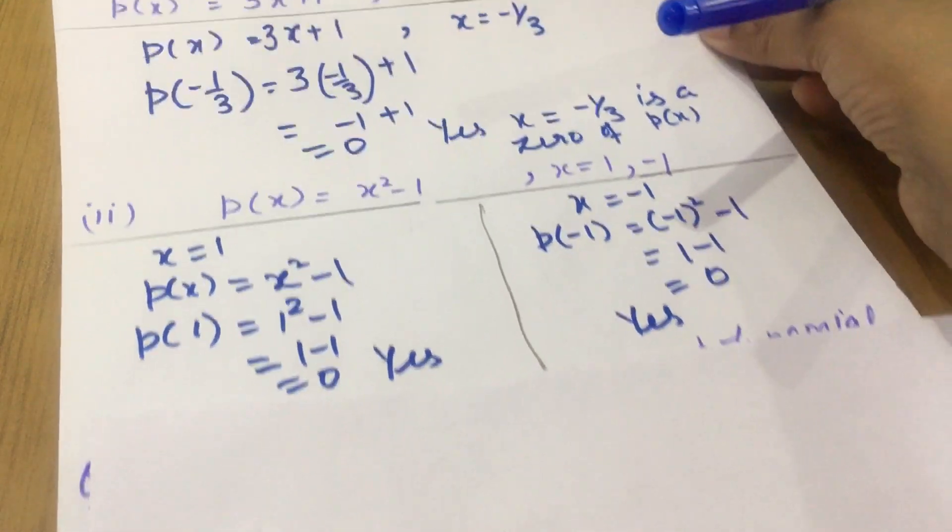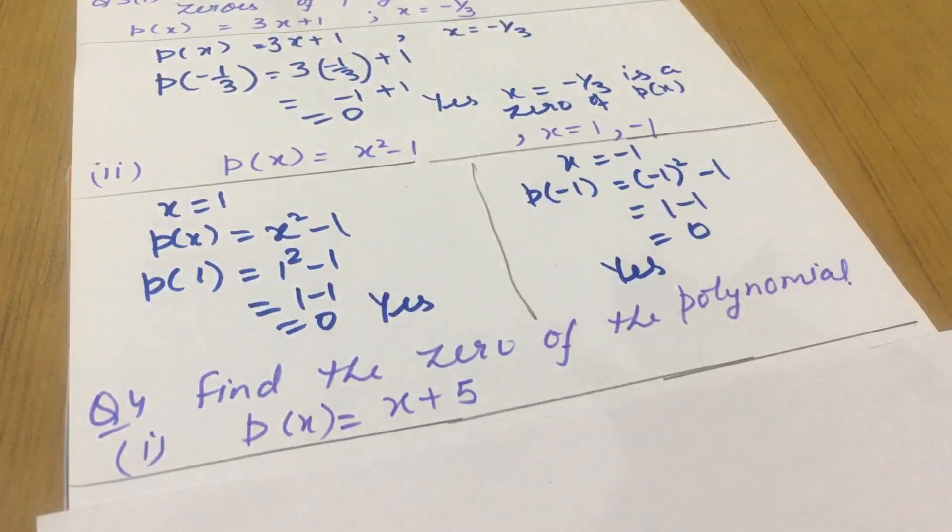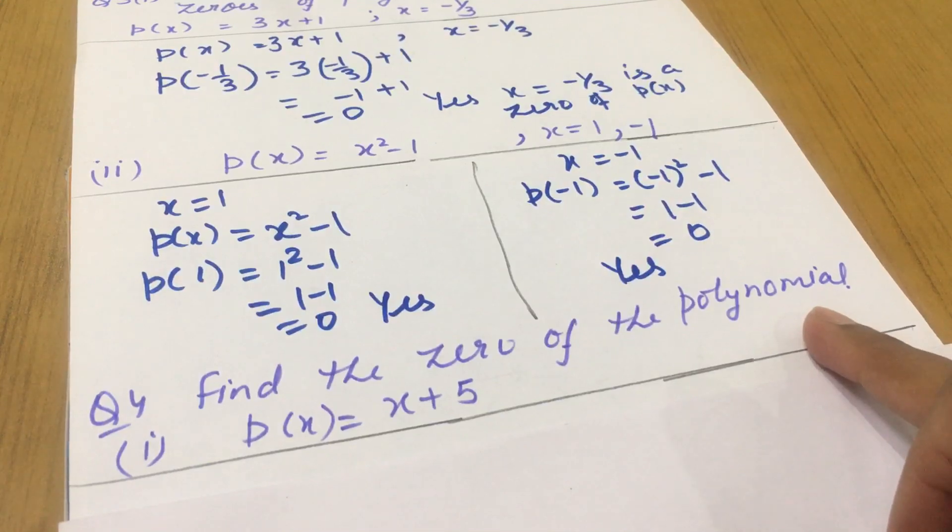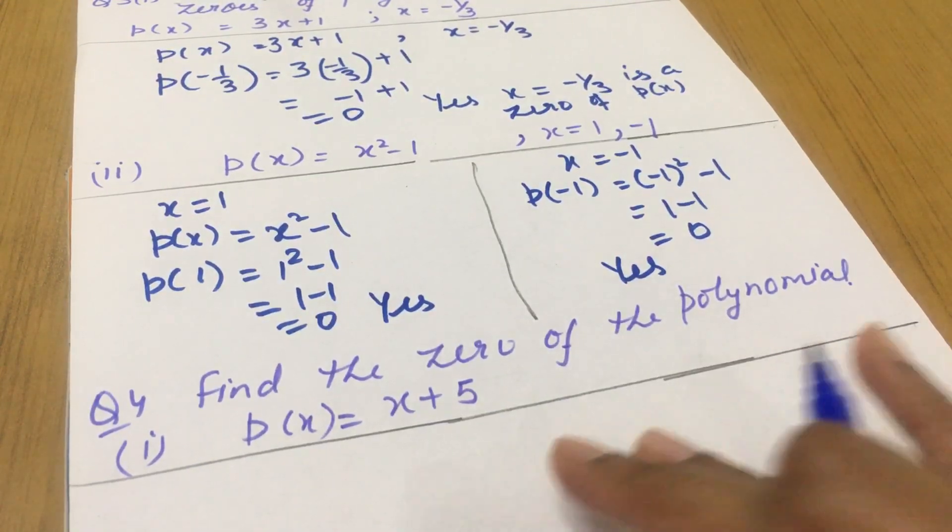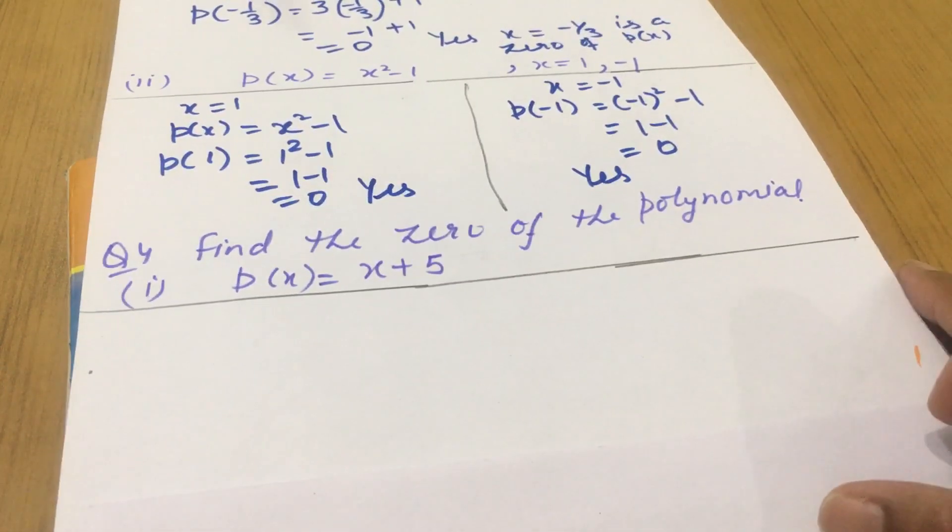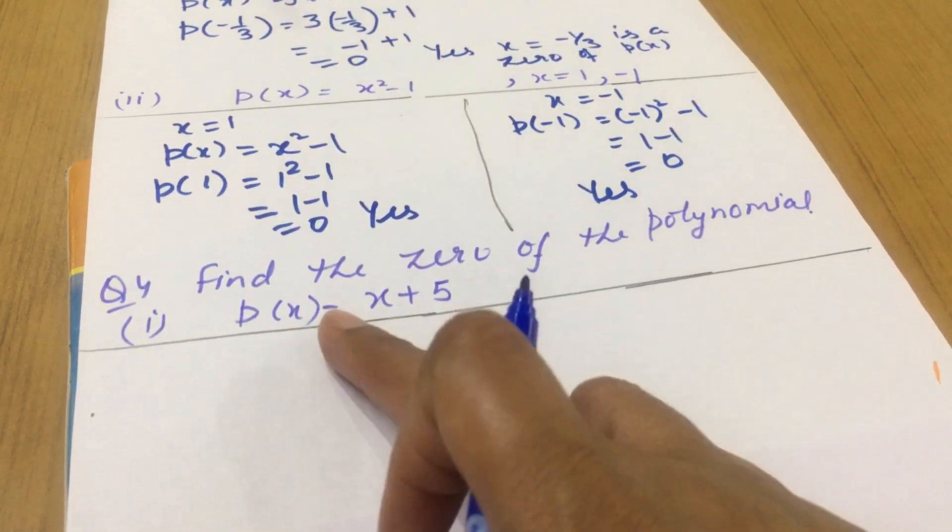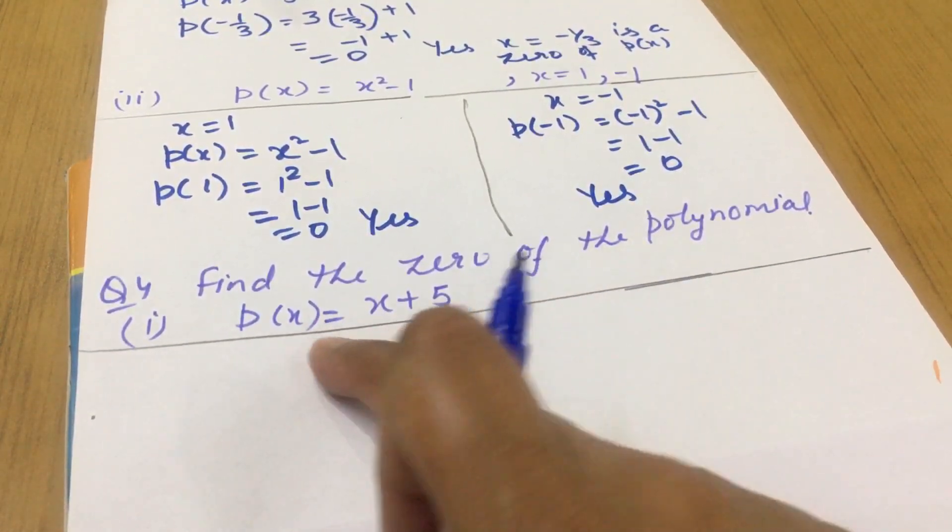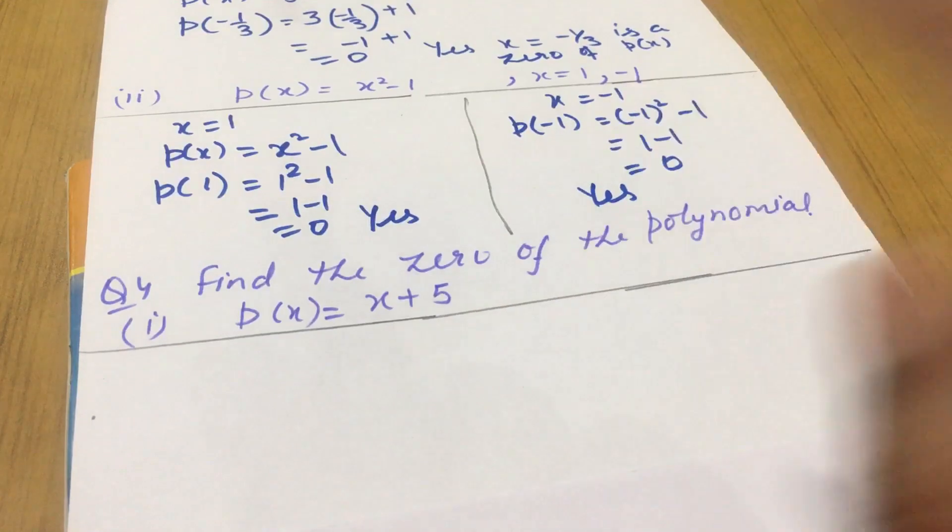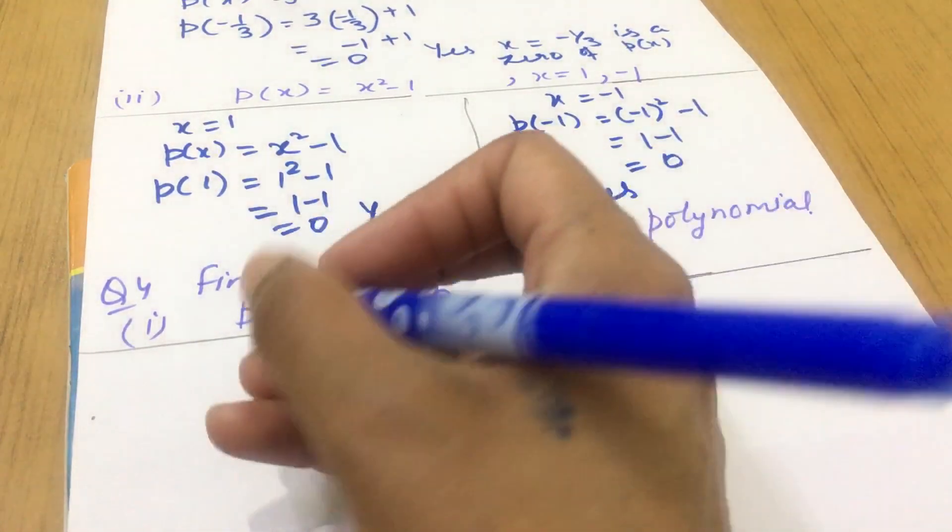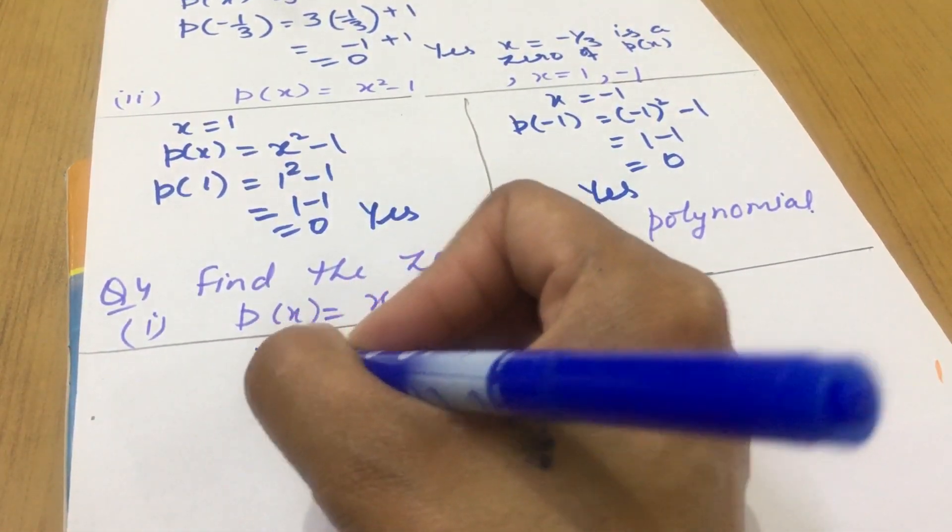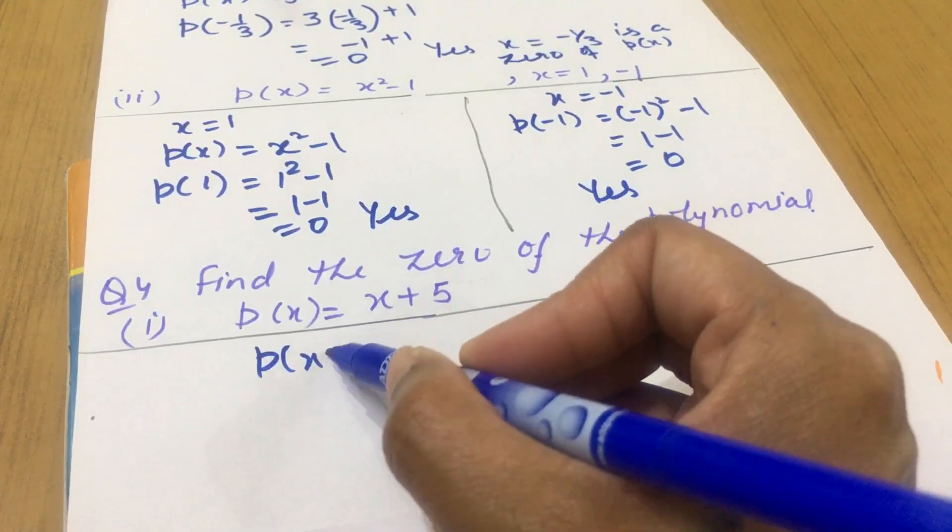Let us move on to question number 4th. Find the zero of the polynomial if p(x) equals x plus 5. It means whenever you need to find out, set p(x) equals to 0.